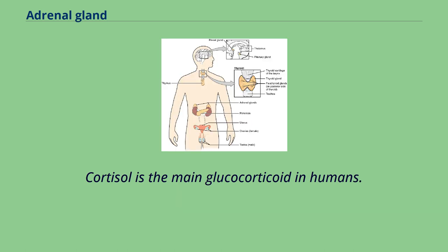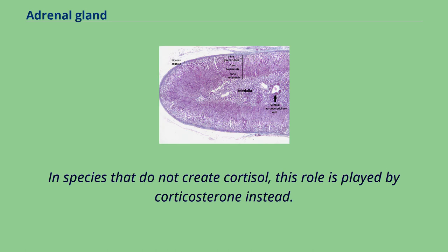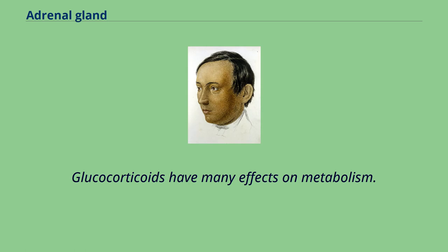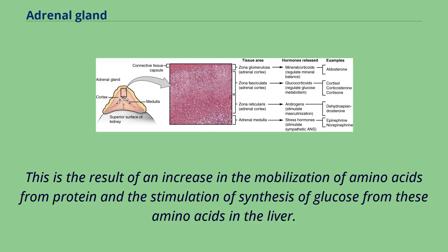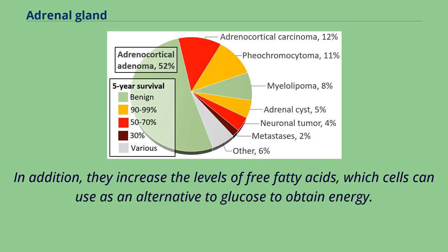Cortisol is the main glucocorticoid in humans. In species that do not create cortisol, this role is played by corticosterone instead. Glucocorticoids have many effects on metabolism; as their name suggests, they increase the circulating level of glucose. This is the result of an increase in the mobilization of amino acids from protein and the stimulation of synthesis of glucose from these amino acids in the liver. In addition, they increase the levels of free fatty acids, which cells can use as an alternative to glucose to obtain energy.